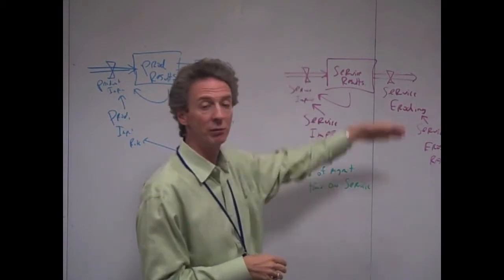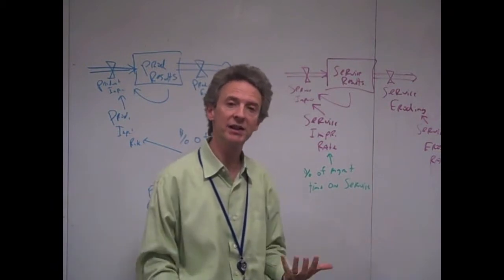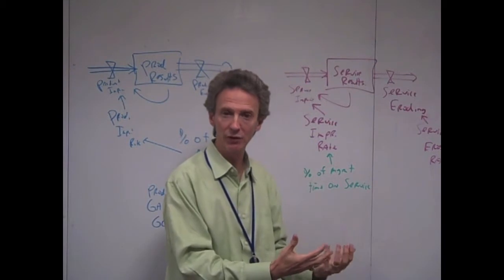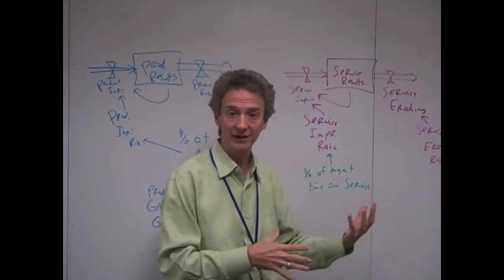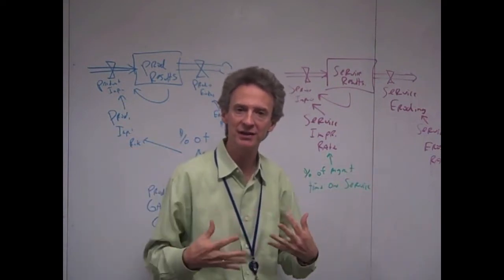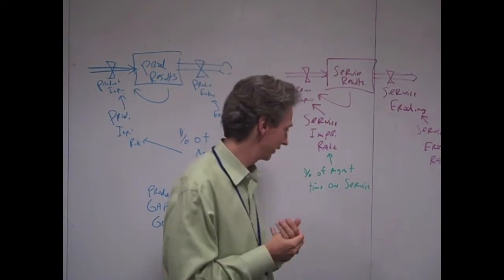You have the exact same loop over on the service side. So service results will erode, you're missing your goal by a lot, you swoop over, spend more time on it, that helps it improve and it's a balancing loop again. It's when we hook these two loops together that you can see many problems come up. So I'll show you how to hook these loops together.